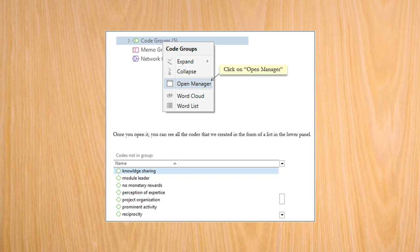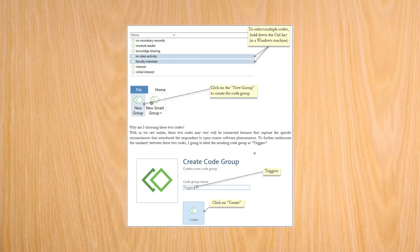I am going to do so by creating code groups. A code group or a code family is a collection of individual codes that are in some way similar. To create a code group, open code group manager. Once you open it, you can see all the codes that we created in the form of a list in the lower panel. From this list, we select the codes that we want to group, drag and drop them in the upper panel and name the resulting group.